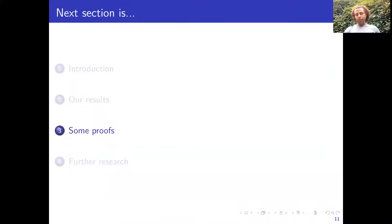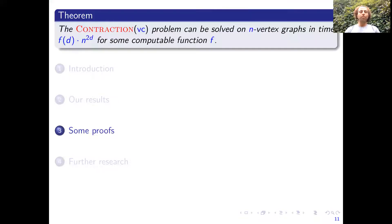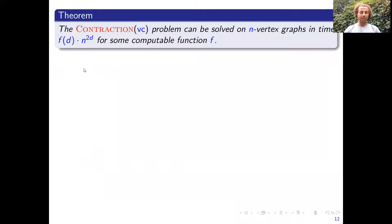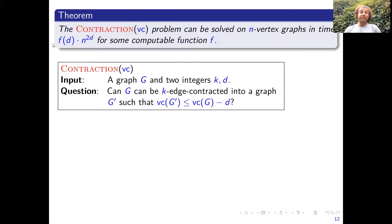Let me show you some of the proofs, focusing on the algorithm. The NP-hardness reductions are from a restricted version of 3-SAT and can be found in the proceedings. For the vertex cover contraction problem, before providing the algorithm, let's check that the problem is at least NP-hard. We show it is NP-hard even if the vertex cover number of the graph is given. The particular case d equal to the vertex cover number minus one means we want to drop vertex cover to one — that means contracting to a star, which is equivalent to the connected vertex cover problem.